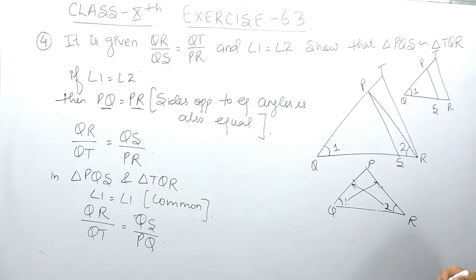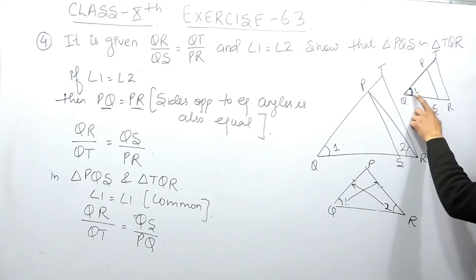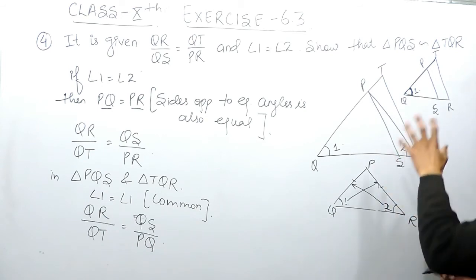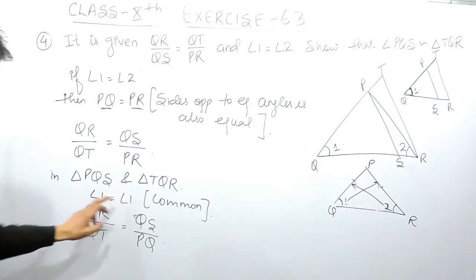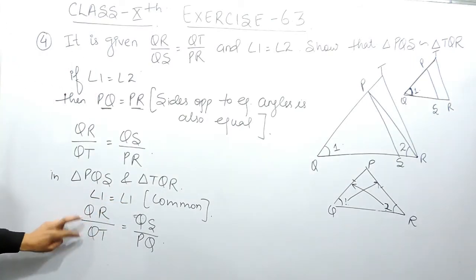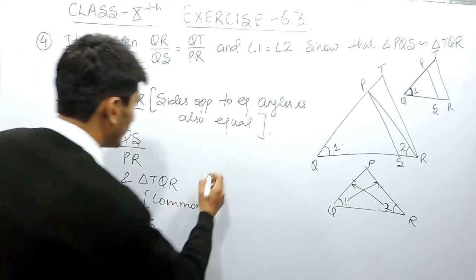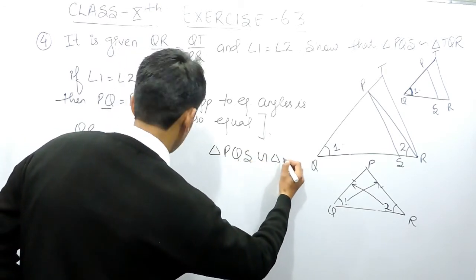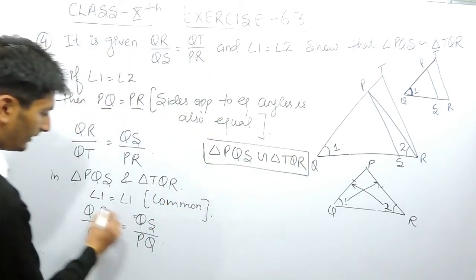So in a triangle, if one angle is equal and the sides containing that angle have an equal ratio between them, then those two triangles must be similar. So we can conclude that triangle PQS is similar to triangle TQR by this property.